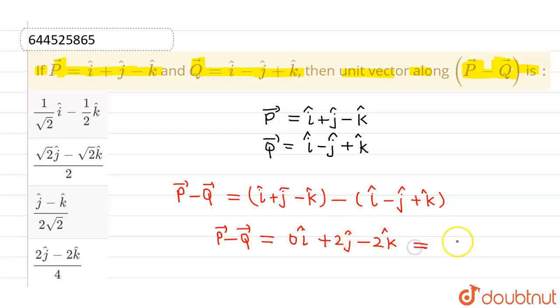So overall, P vector minus Q vector equals 2 j cap minus 2 k cap. Let us assume that this particular vector is Z vector.